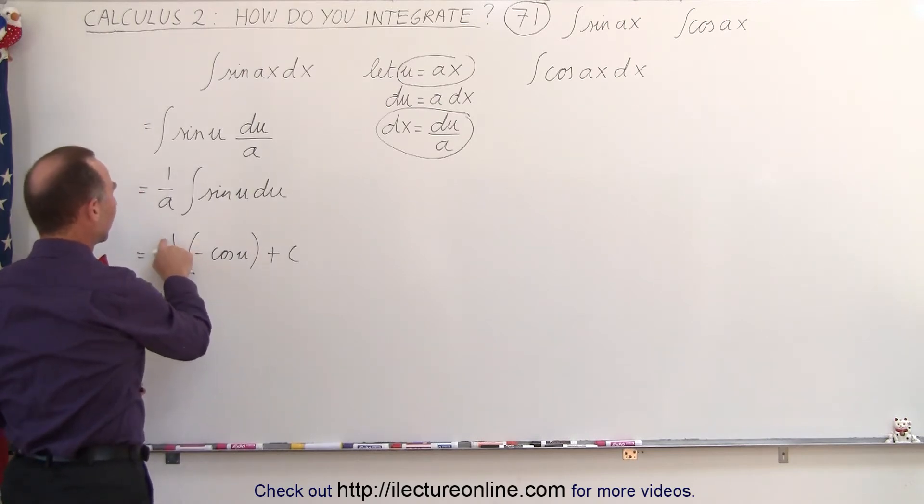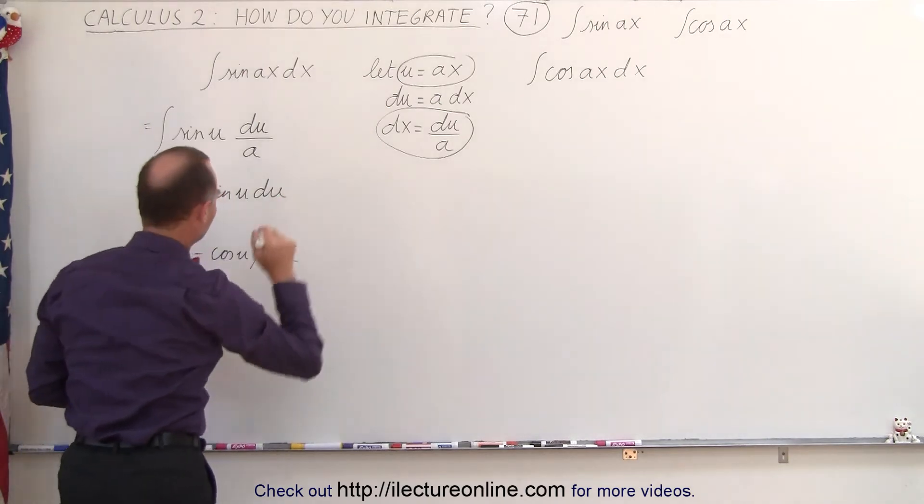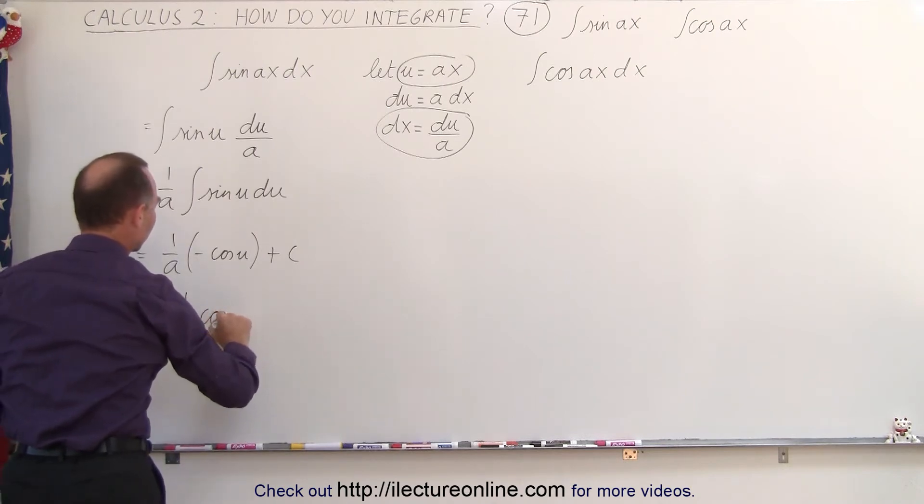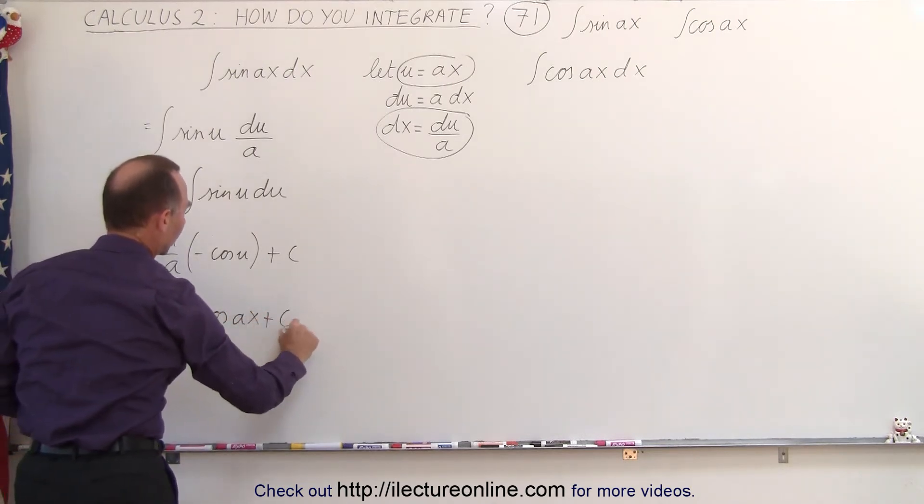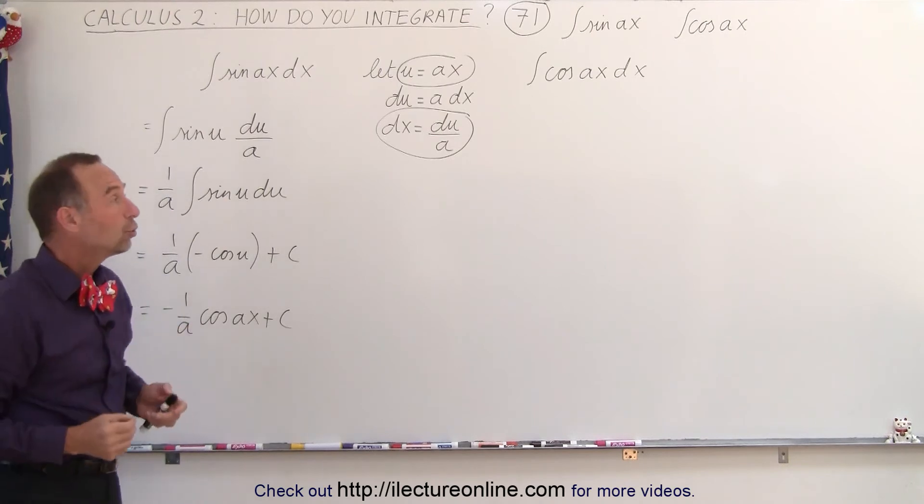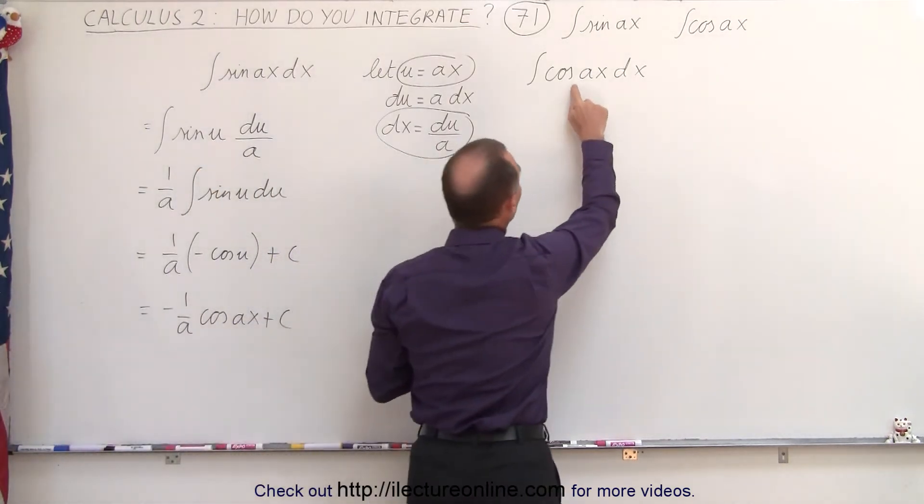Then we'll put the negative in front, and instead of u, we write Ax, and so this becomes negative 1 over A times the cosine of Ax plus a constant of integration. So that's how we do that, by replacing Ax by u. Now, what we can also do is just simply look at this and say, well,